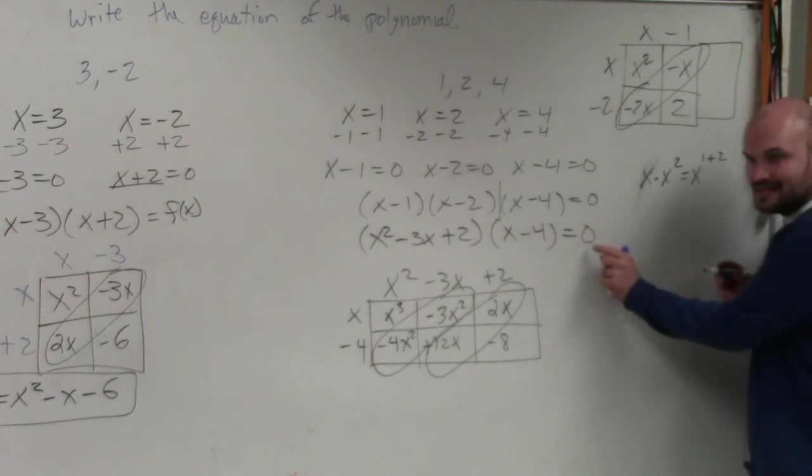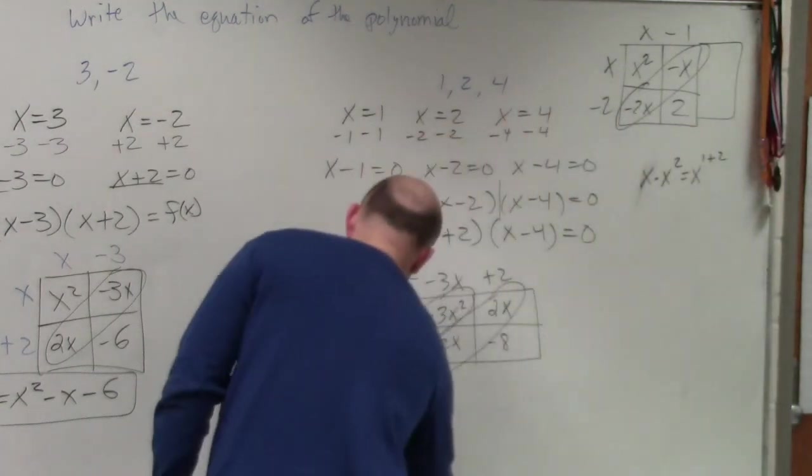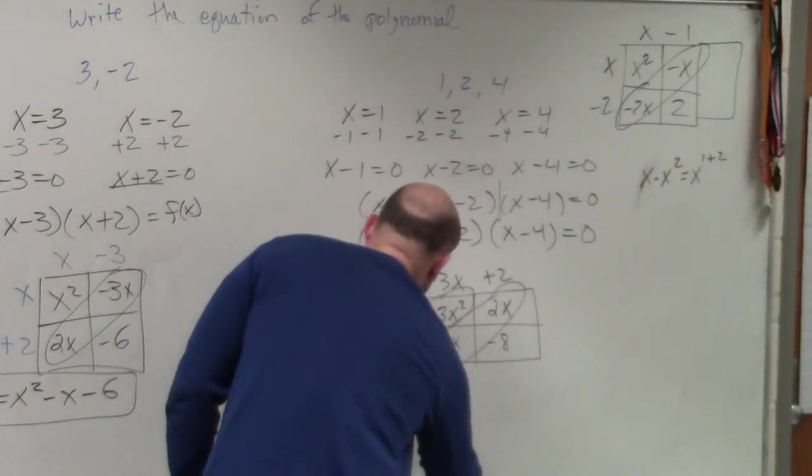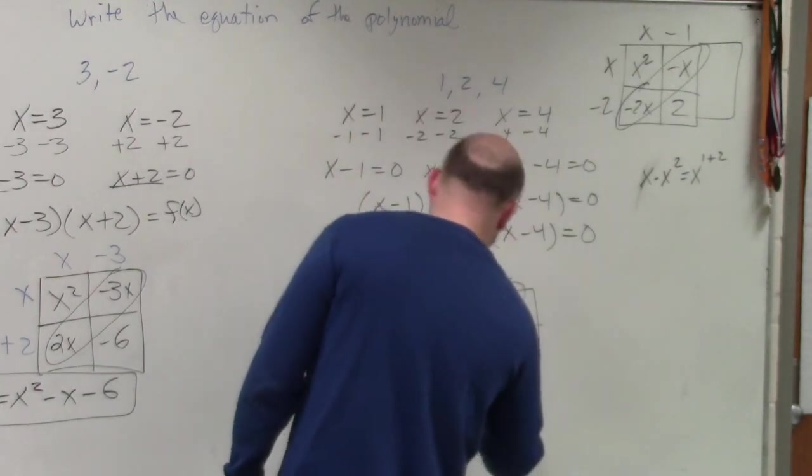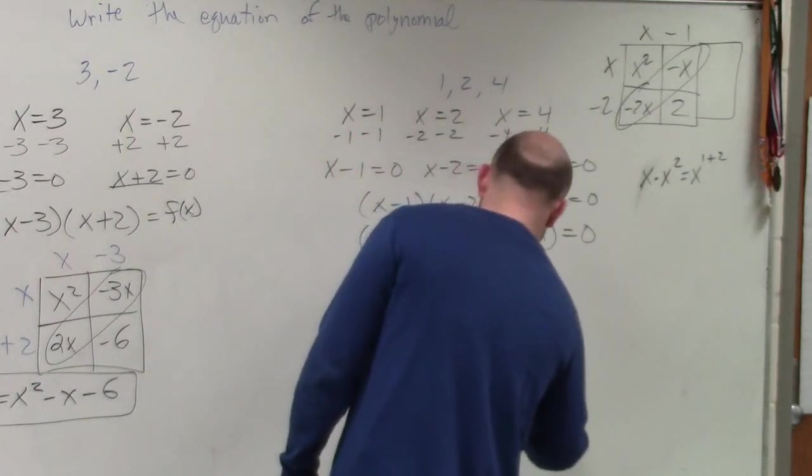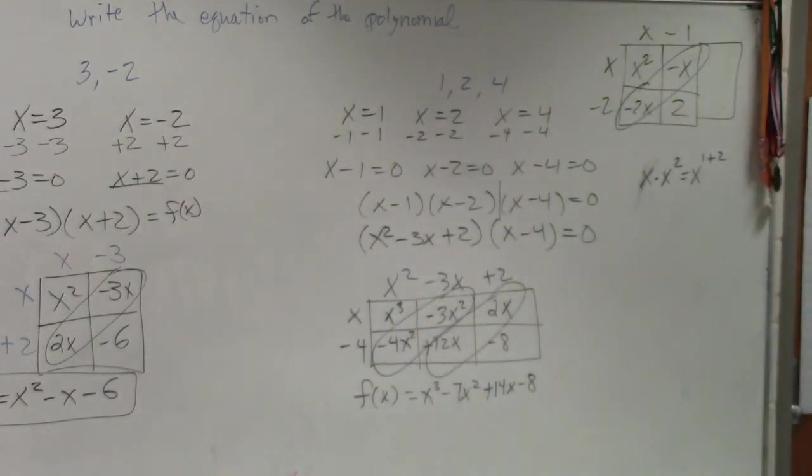Now remember, we're not trying to set this equal to 0. We're trying to set this equal to your equation, y or f of x. So my final answer is f of x equals x cubed. Negative 3x squared minus 4x squared is negative 7x squared plus 14x minus 8. And that is your final answer.